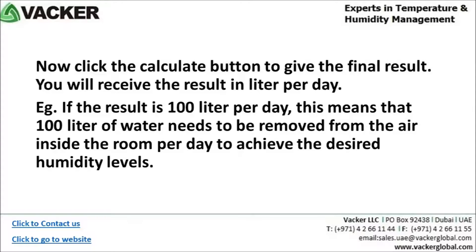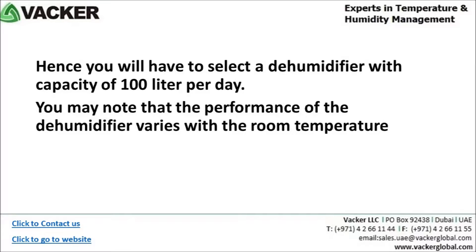Now click the calculate button to get the final result. You will receive the result in liters per day. For example, if the result is 100 liters per day, this means that 100 liters of water needs to be removed from the air inside the room per day to achieve the desired humidity levels. Hence, you will have to select a dehumidifier with a capacity of 100 liters per day. Note that the performance of the dehumidifier varies with the room temperature.